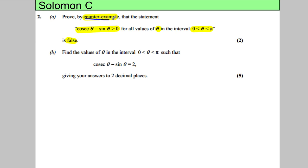So what does counter-example mean? All we need to do is find a value, a theta value, a value of θ, so that this thing is less than or equal to zero. So cosec θ - sin θ is less than or equal to zero.